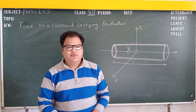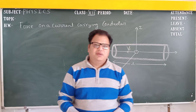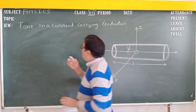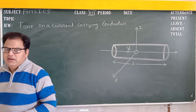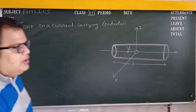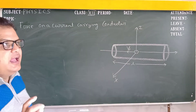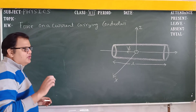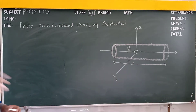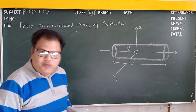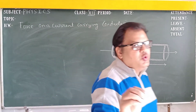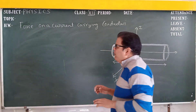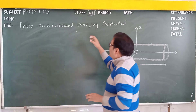Good morning students. I am Shinkan Nidhapil. Today we are going to learn about force on a current-carrying conductor. In the previous class we learnt about what happens when charged particles enter a magnetic field — they experience a force that is F equal to QV cross B.